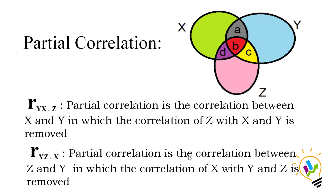When we talk about partial correlation, we have three variables. When we want to find the correlation between x and y but control the third variable, we need to find the partial correlation. The notation r_yx·z means we are trying to find the correlation between y and x while partialing out z. In the diagram, the z correlation is removed — the portions a, d, b, c are not included — and we find the correlation between x and y only.